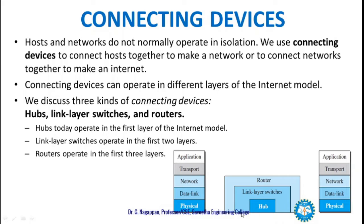Hub, link layer switches, and routers. Hubs operate in the first layer in the internet model. Link layer switches operate in layer 2. Routers operate in the first three layers together. All other above layers are considered to be mostly software layers.